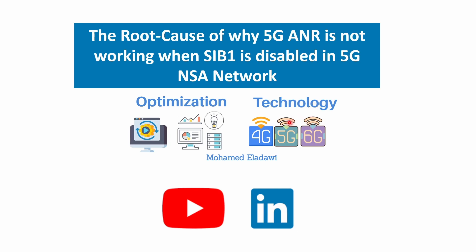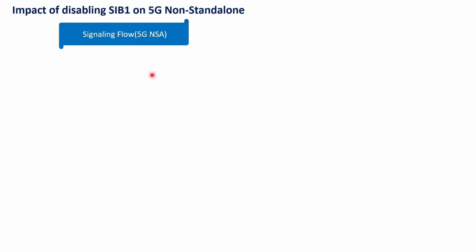Hi everyone. In this video I'm going to give a quick explanation of why 5G NR is not working whenever SIB1 is disabled on a 5G non-standalone network. So let's go through it — it will be a quick one. This is a signaling flow for 5G non-standalone handover whenever the UE is trying to move from one 5G cell to another cell.